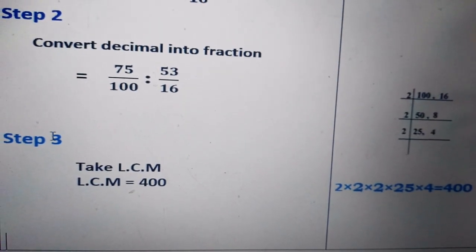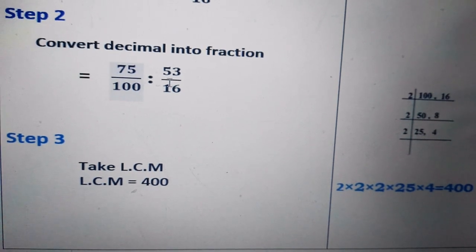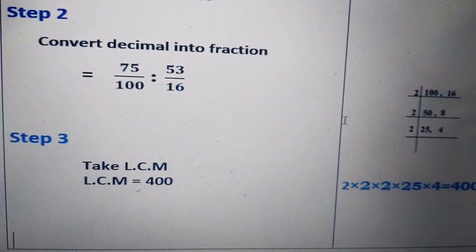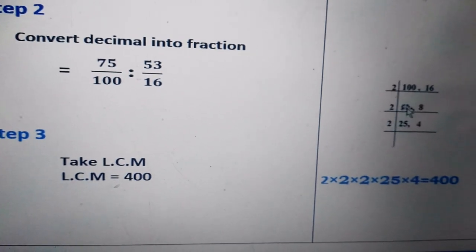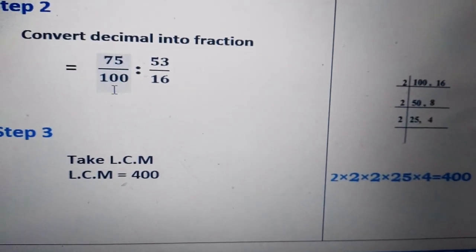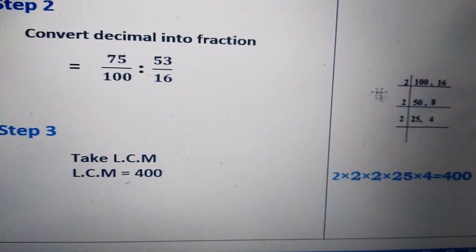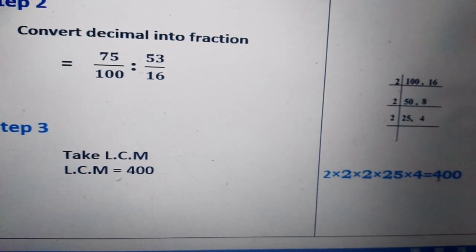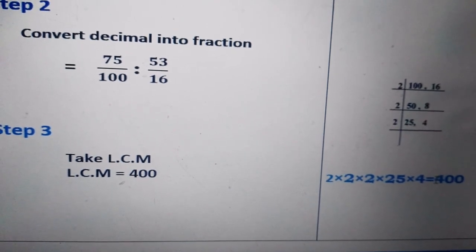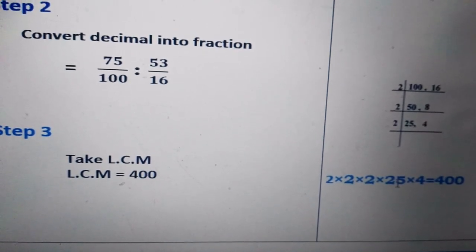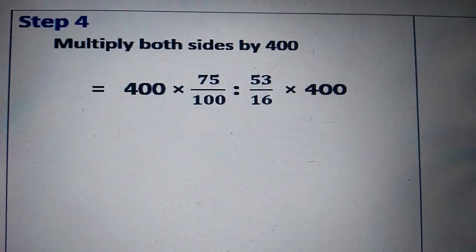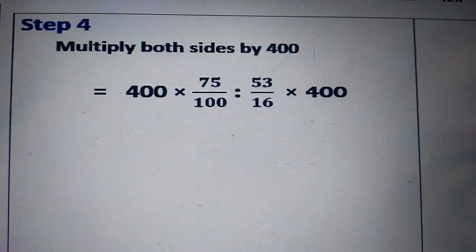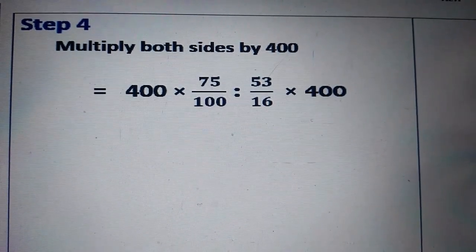Now comes step number three. Since both are fractions, we will take the LCM by prime factorization of the denominators, which are hundred and sixteen. By doing this, we find that the LCM is equal to four hundred. So in the next step, step number four, we will multiply four hundred on both sides.